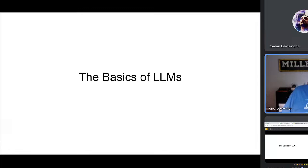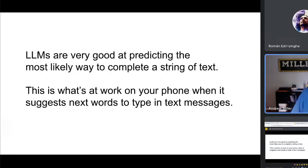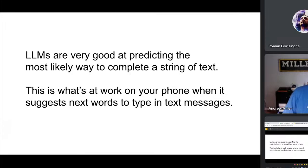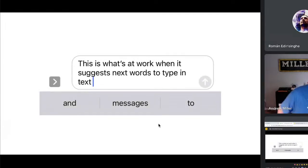Let's talk about the basics of LLMs — large language models. This is the highest of high-level overviews. Even though this might feel like school for five minutes, knowing a little about how these things work behind the scenes is going to be very helpful. The simplest way to explain it is autocomplete. LLMs are really good at predicting the most likely way to complete a string of text, very similar to what happens on your phone when you start typing a text message.